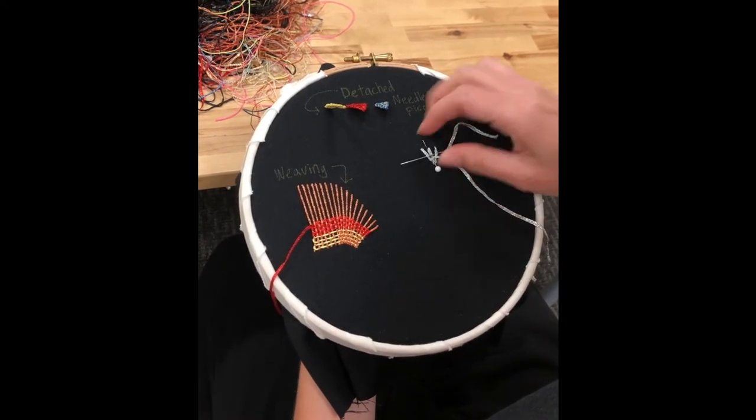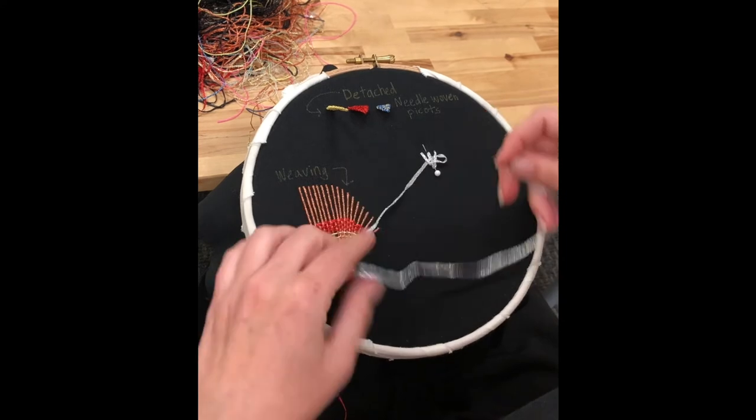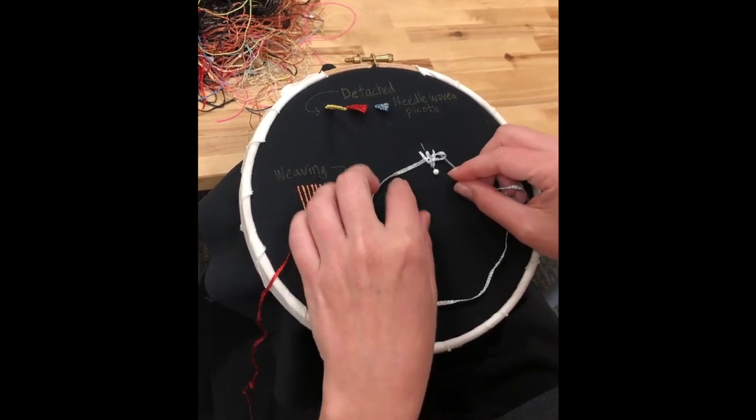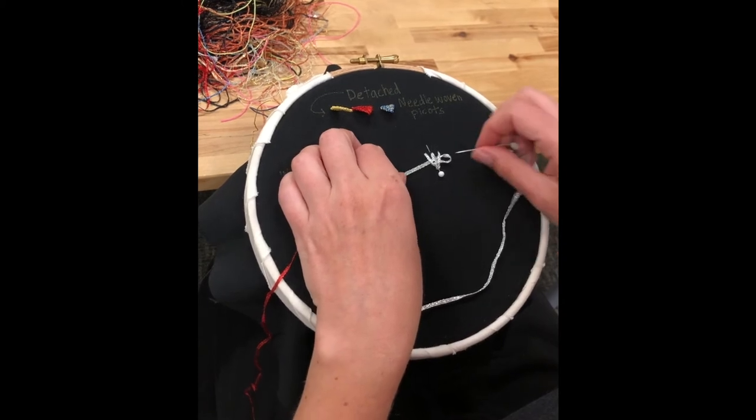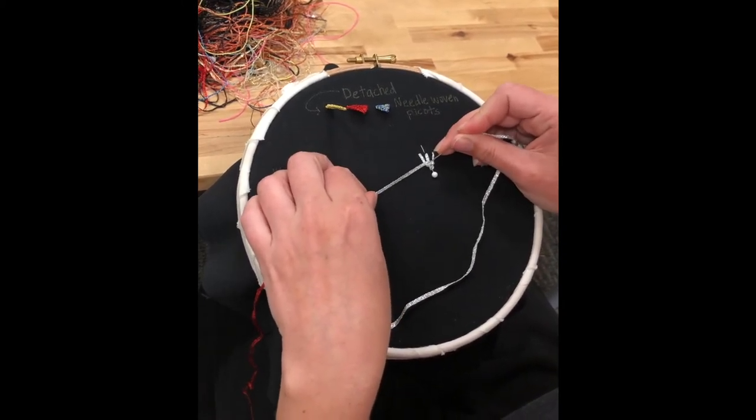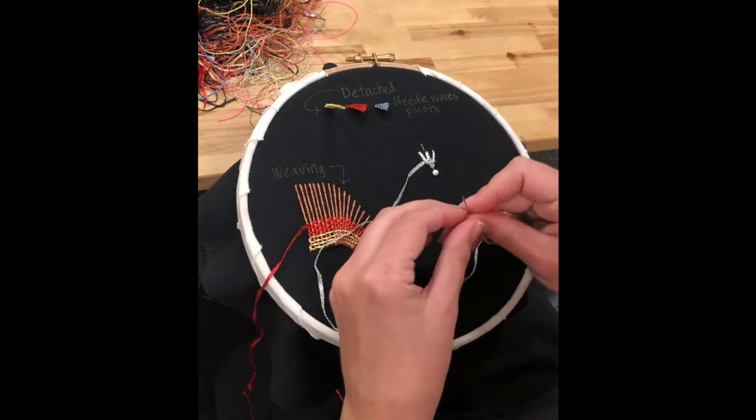Under, over, under. And it's up to you if you want to worry about how flat these threads are. If you want, they can just twist and do whatever, or you can keep them nice and flat. I'm just kind of going with the flow and letting them twist on themselves.